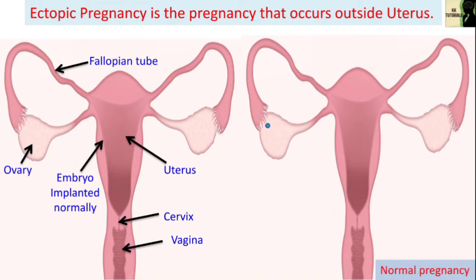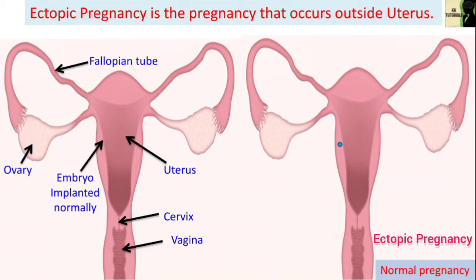When the ovary ovulates and releases the egg, the female egg travels through the fallopian tube where it meets sperm cells and gets fertilized. This fertilization takes place in the fallopian tube. Once fertilization takes place, this newly formed cell moves down the fallopian tube and into the uterus. This movement is facilitated by the presence of cilia in the fallopian tube, and within the uterus this embryo implants — this is the beginning of a normal pregnancy.